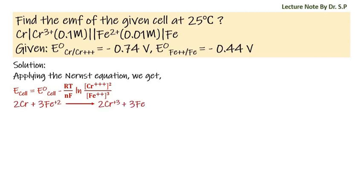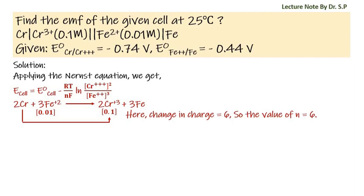Now let us write the cell reaction as shown on the screen. Here the charge of chromium at reactant is zero, there is no charge on chromium in reactant side, but the chromium has six charges in product side. Hence the total change in charge is six. Therefore, the number of mole of electrons transferred n in this reaction is six, so the value of n is six in Nernst equation.